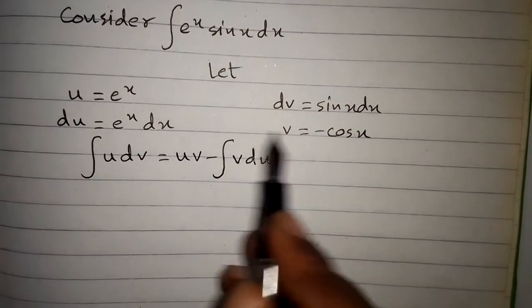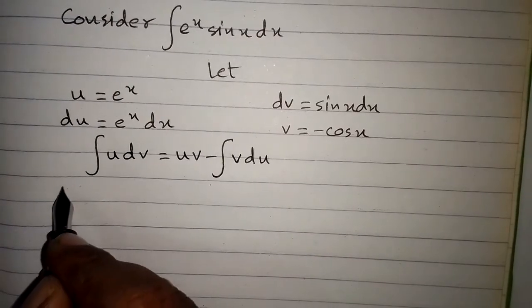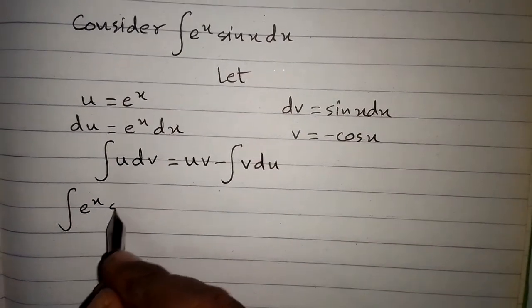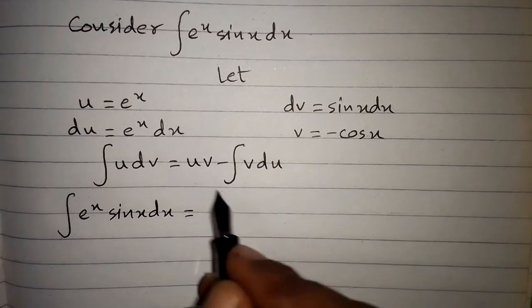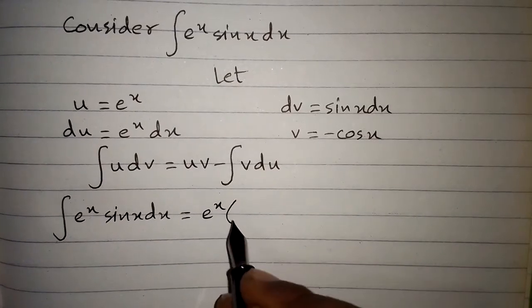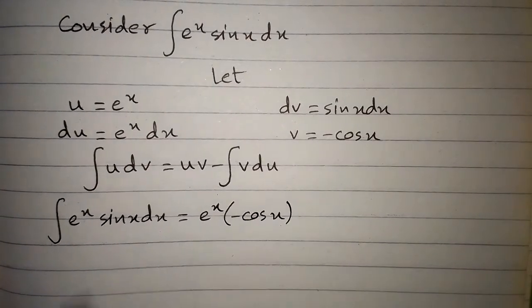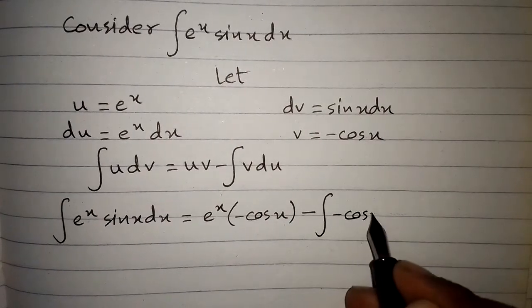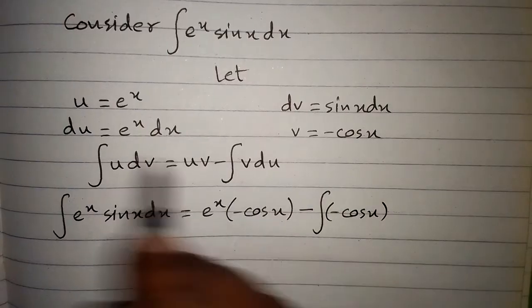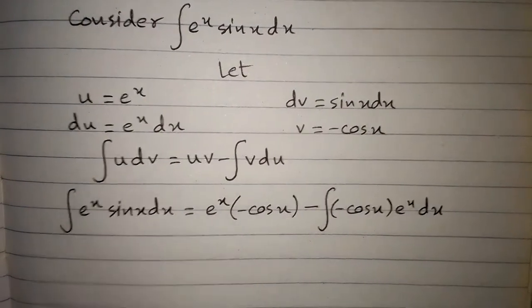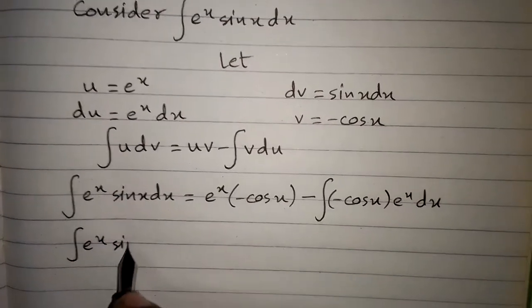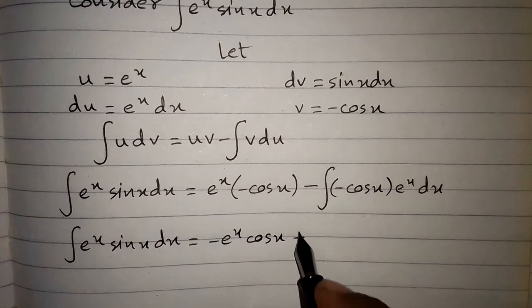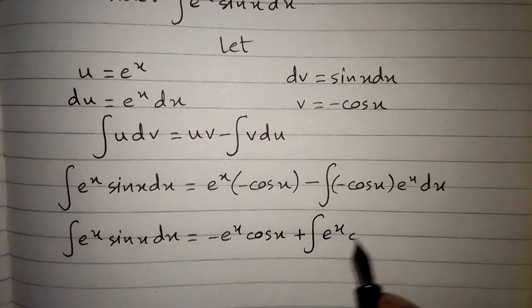Now we put the values of u, v, du, and dv into the formula. The integral of e to the power x sin x dx equals u times v, which is e to the power x times minus cos x, minus the integral of v du, which is minus cos x times e to the power x dx. This simplifies to minus e to the power x cos x plus the integral of e to the power x cos x dx.